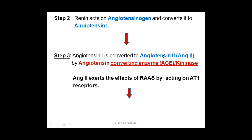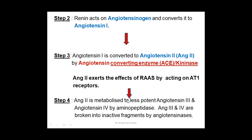Angiotensin 2 exerts its effects by acting on receptors called AT1 receptors. All the effects we expect from the RAS system are exerted through angiotensin 2. After angiotensin 2 exerts its effects via AT1 receptors, it is metabolized to less potent angiotensin 3 and 4, which are broken into inactive fragments by angiotensinases. The key area to focus on is the conversion of angiotensin 1 to angiotensin 2 by ACE.